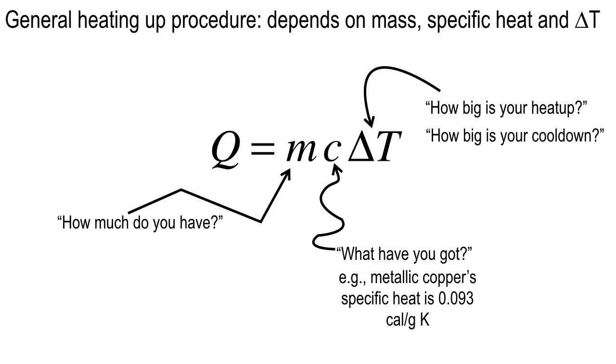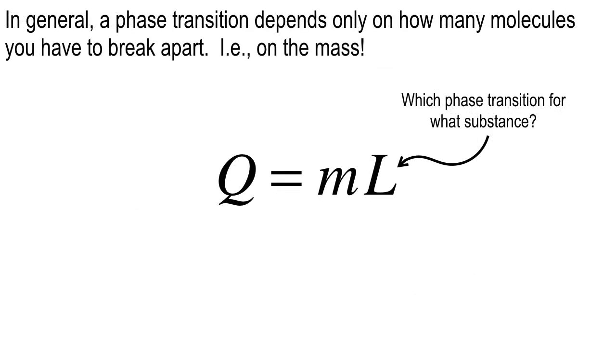The specific heat tells you numerically how easy is it to heat up a gram by one Kelvin. That's the heat up procedure, Q equals MC delta T. Now, at the phase transition, it's a little bit different. If you raise a hunk of ice up to 273, and then you stop adding energy to it, it's going to stay a piece of ice. Because it takes work to break those crystalline bonds apart and make it into liquid. And that's what the phase transition is about. The phase transition, the amount of heat energy you need for that depends really only on how many atoms or molecules that you've got.